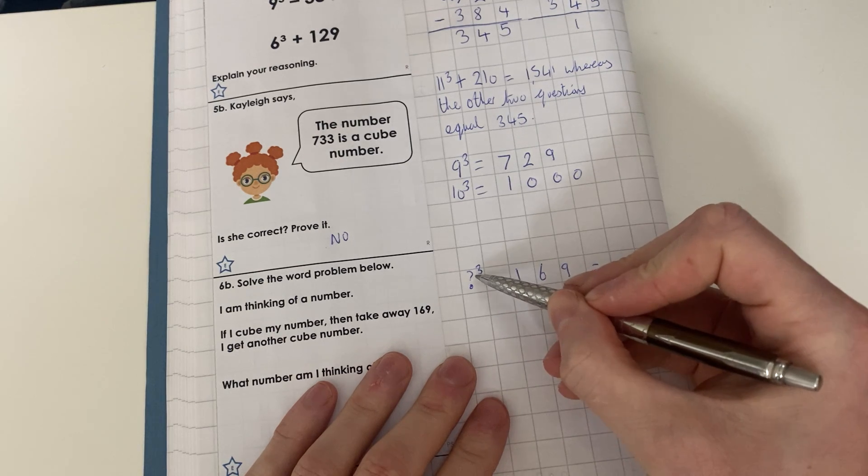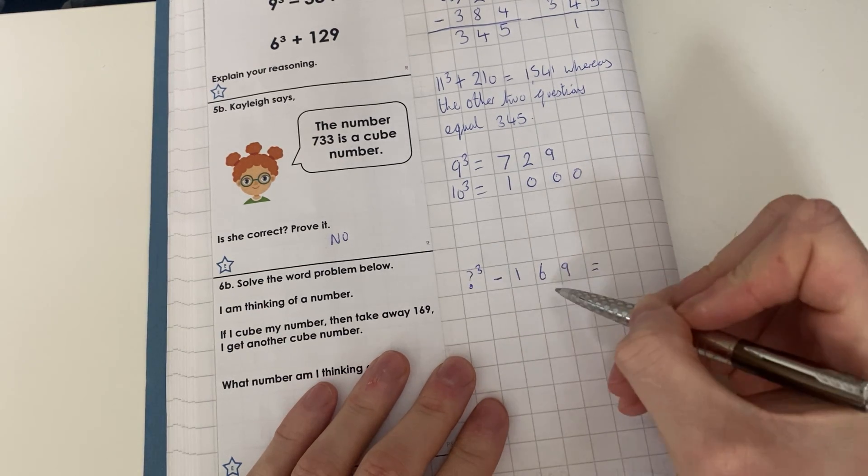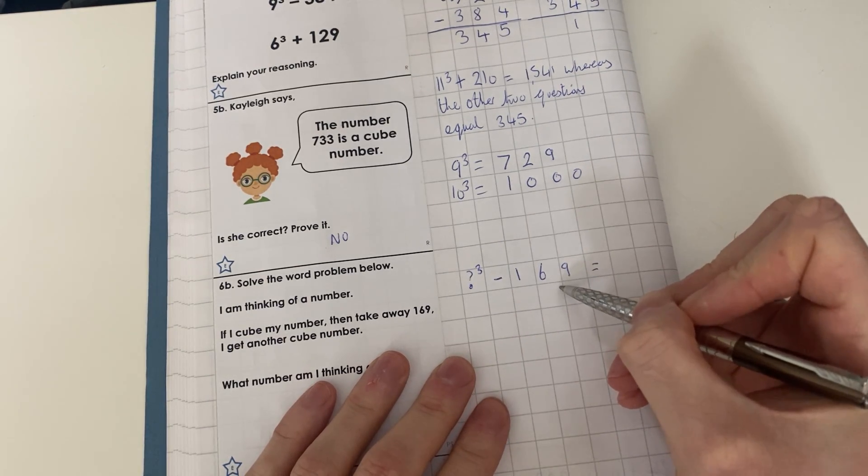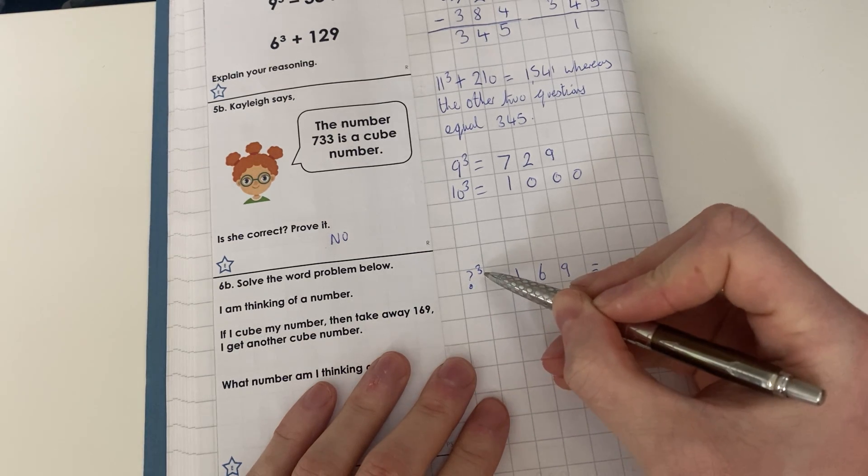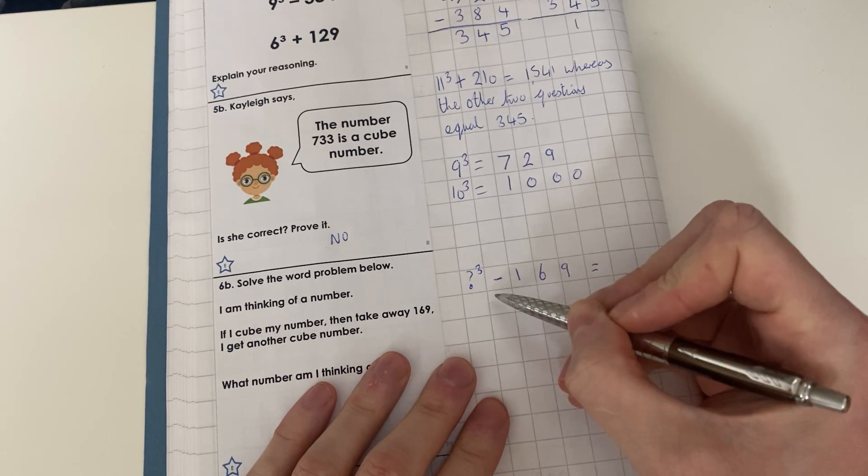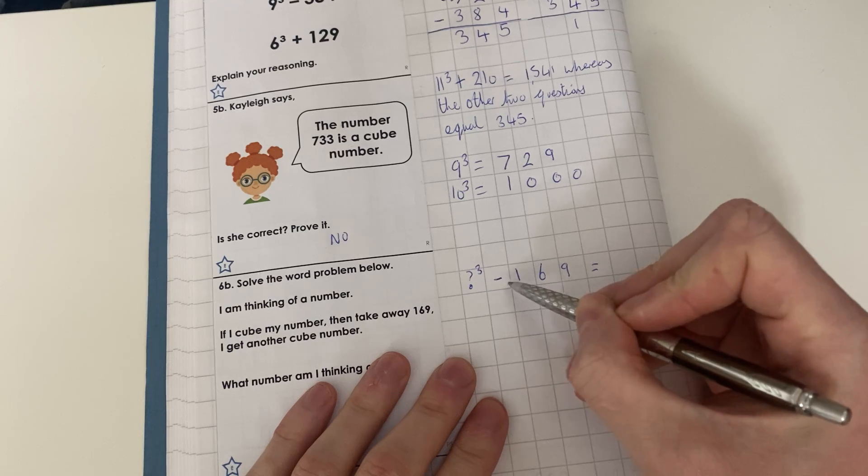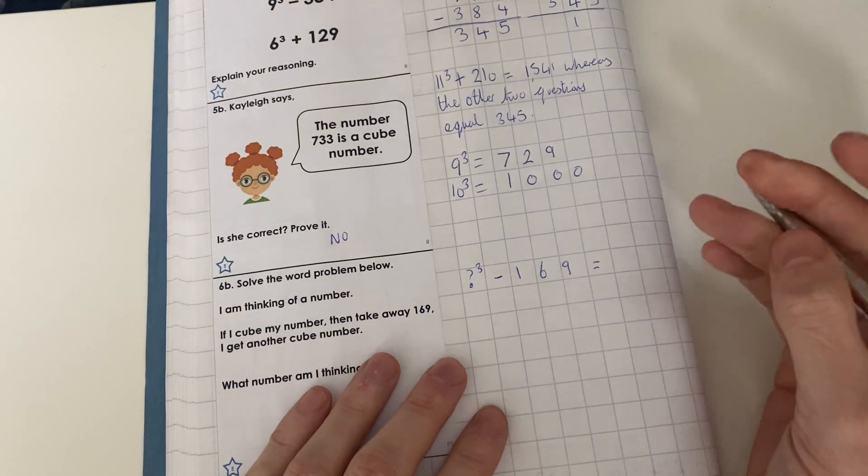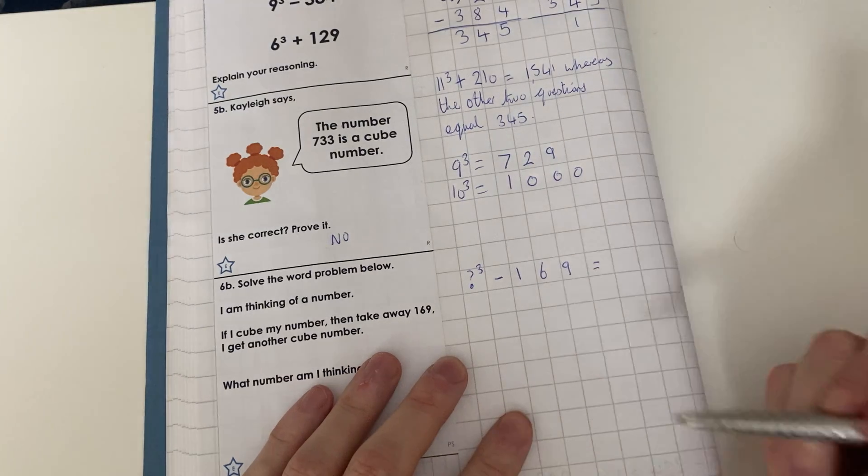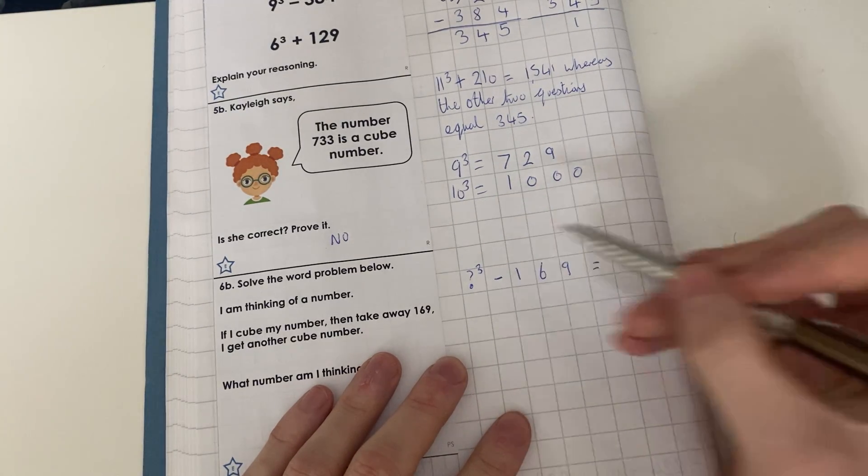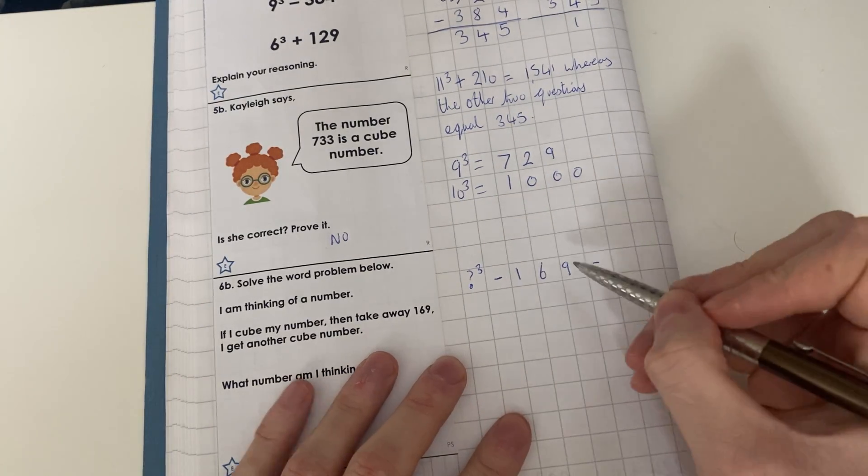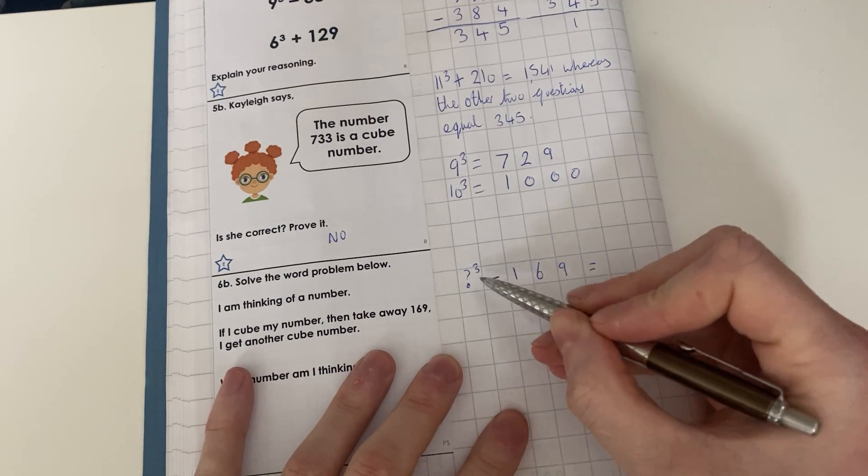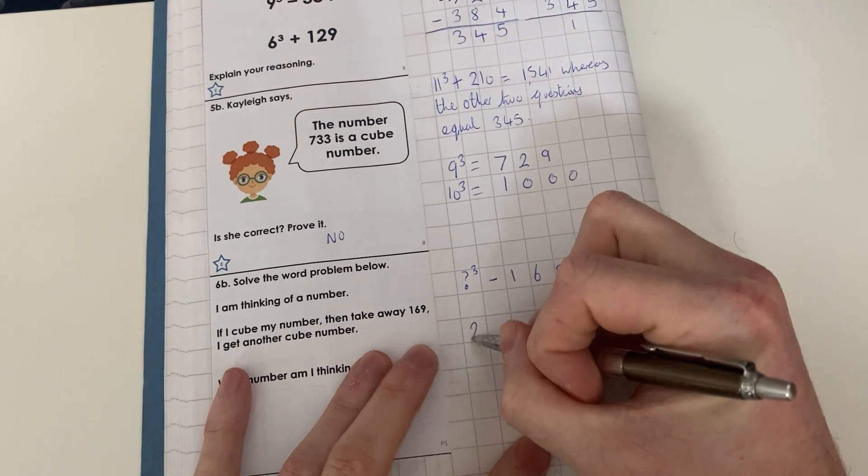But we need to make sure that whatever we cube has to be greater than 169. So I couldn't do 4³ here because 4³ is 64, and I can't do 64 - 169. 5³ is 125, so I can't do that. 6³ is 216, so we're going to use 6³ now, which is 216 - 169.